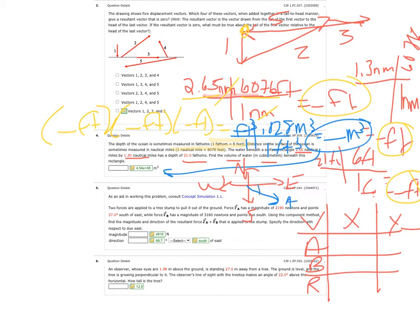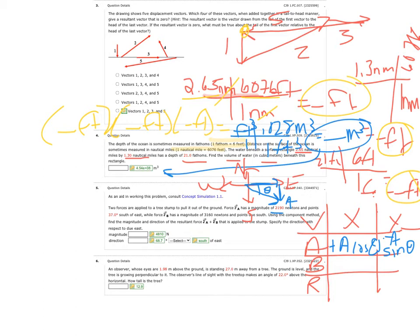Vector a points some angle theta south of east. The x component is positive — it equals a·cosine(theta) — and the y component is negative, so it equals negative a·sine(theta). For vector b, which points exactly south, there is no x component and it points straight down, so the y component is just negative b. Then you add the components to get the totals for the resultant r.